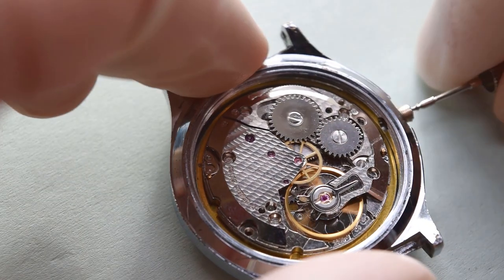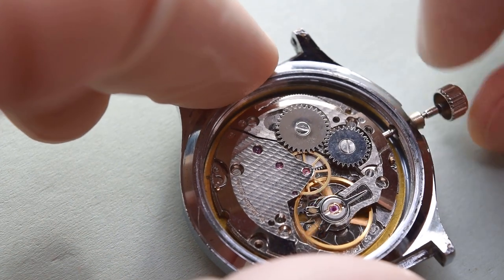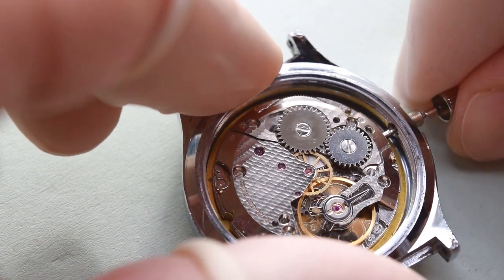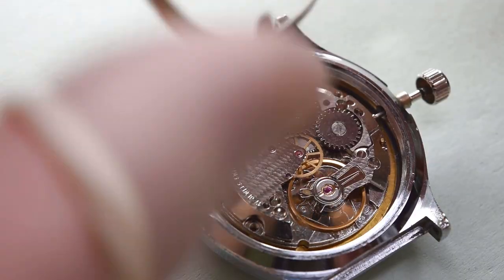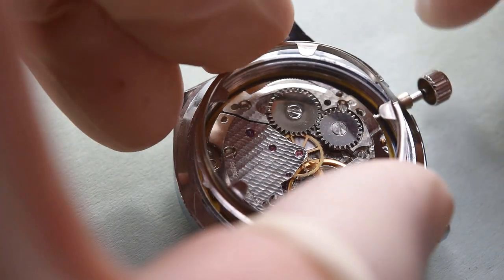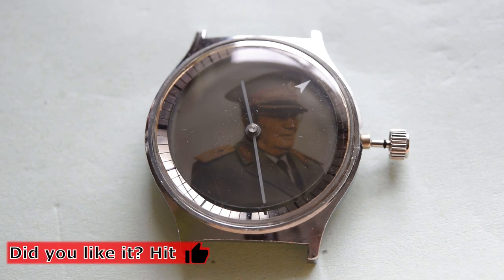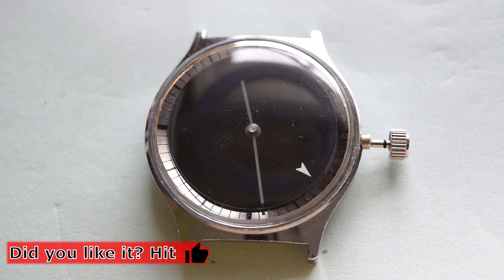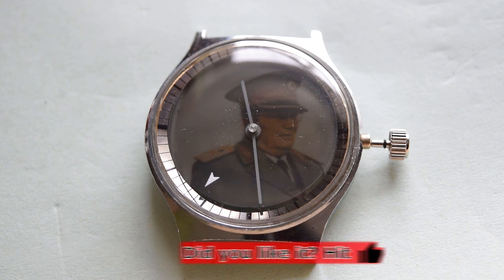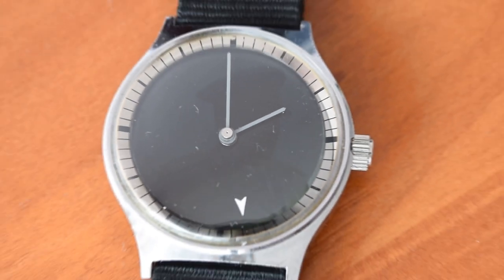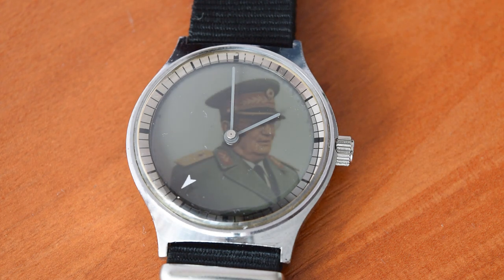Of course the winding stem has to be shortened, now it's only temporary. And yeah, here we have it. It's really nice here made, because depending on which position is the second disc, the face of Tito, of Marshall Tito, appears and disappears. So this is nice by this watch.